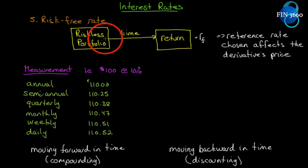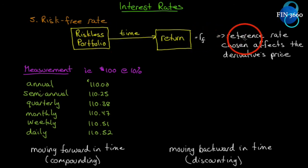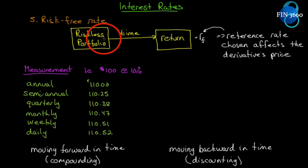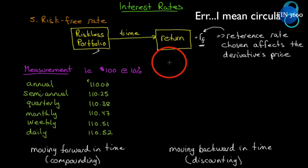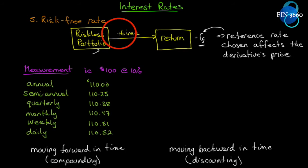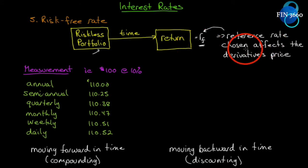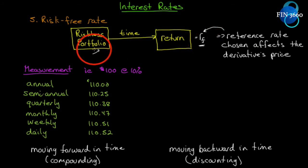A riskless portfolio will be arbitraged away to the point where the only return on it is the risk-free rate. Whatever reference rate we choose for the risk-free rate, however we price the derivative, we will build a riskless portfolio such that over time it returns that benchmark rate. The reference rate chosen will affect the derivative's price — if you have three or four different rates that are slightly different, the derivative's price will be slightly different in each case.